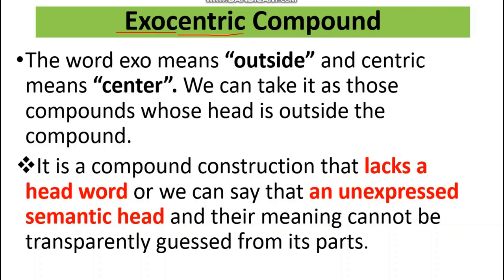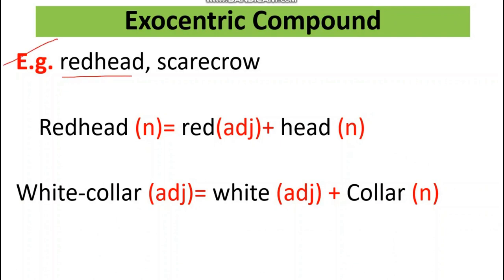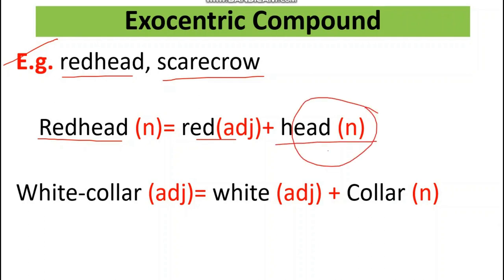For example, take 'redhead'. Redhead is a noun. 'Red' is an adjective and 'head' is a noun. But the head of 'redhead' is not 'head' — redhead means a person who has red hair. The head is outside the compound, so this is an exocentric compound.